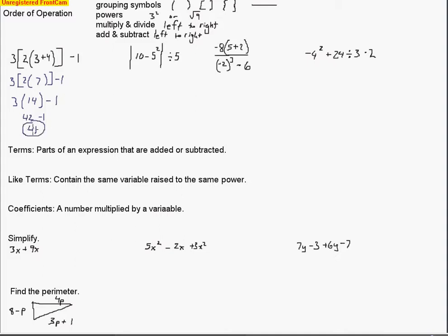Let's take a look at another one. We've got some absolute value bars — think of these as grouping symbols as well. We'll do the work inside those first. We're going to start with the exponent, 5 squared, and we end up with 25. Bring down the absolute value bar and the divide-by-5, and do the subtractions — that leaves us with negative 15. But I've got to take that absolute value first before I divide by 5. So I take the absolute value, get 15, divide by 5, which gives me 3 as our answer.